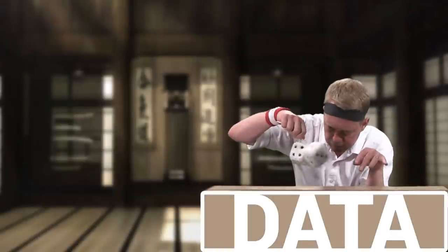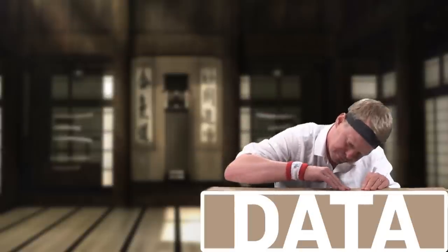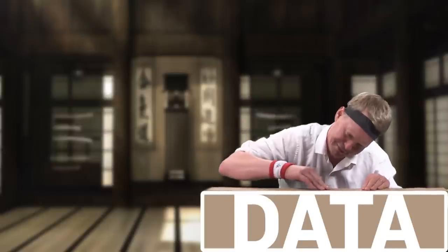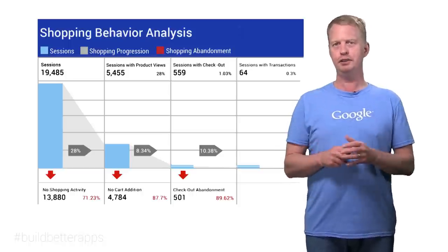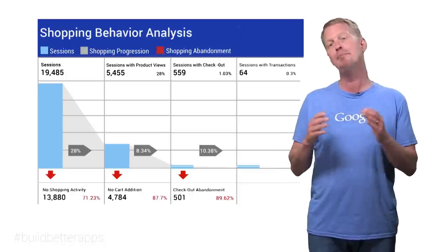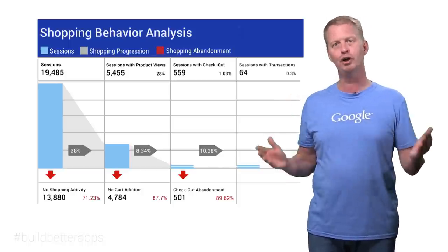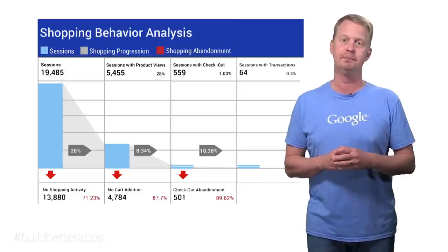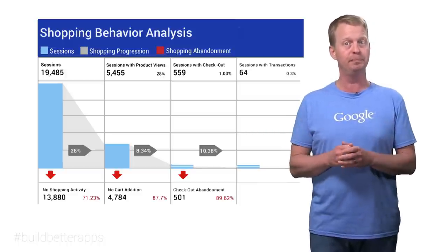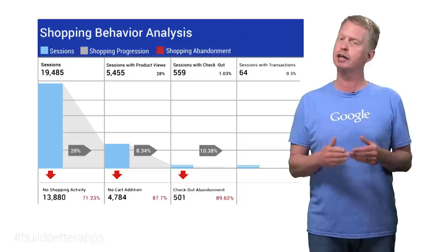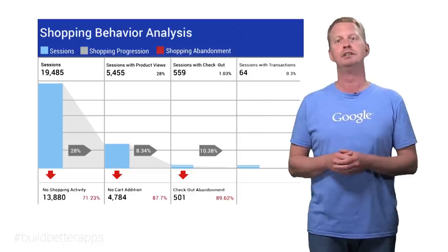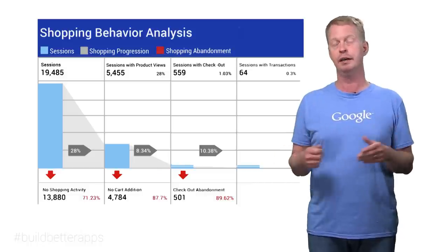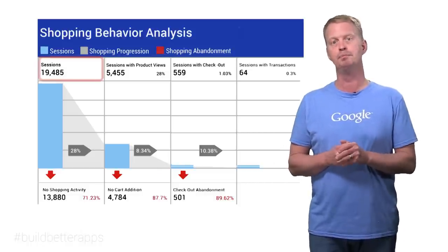You can, for example, slice it, dice it, and massage it. But apart from just doing those operations, data is actually very useful since it can represent things happening in our world. Take a shopping site, for example, where it's pretty important to know what makes it easy and compelling for customers to buy things. Enhanced e-commerce can provide you with all this data.